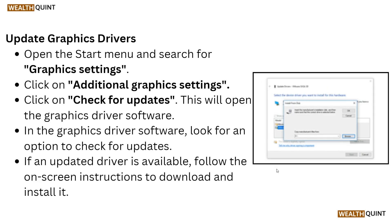Next, update your graphics driver. Open the Start menu and search for Graphics Settings. Click on Additional Graphics Settings and then Check for Updates. This will open the graphics driver software. In the graphics driver software, look for an option to check for updates. If an updated driver is available, follow the on-screen instructions to download and install it.